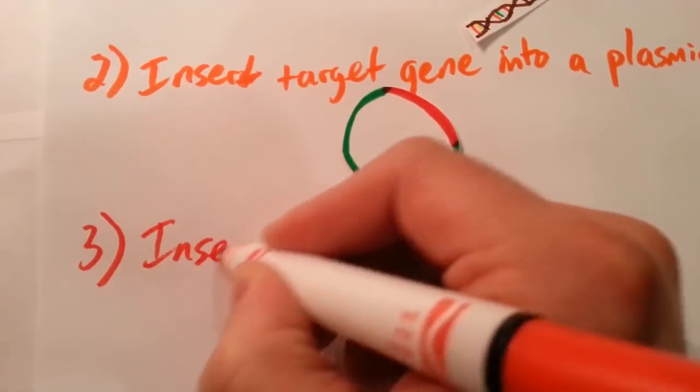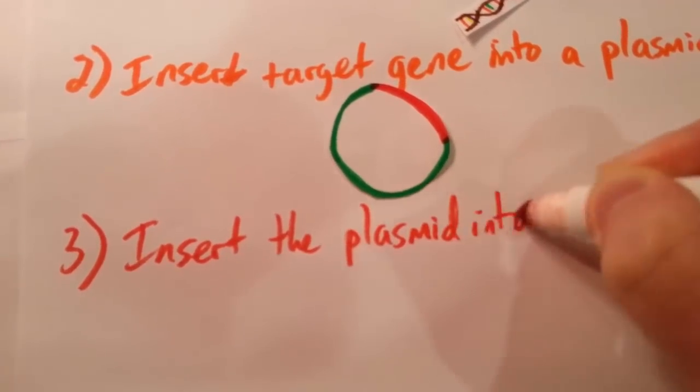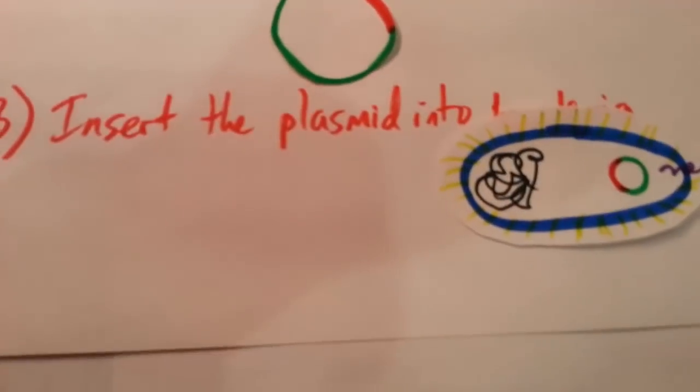And step number three was actually pretty simple. All we had to do was jam our plasmid that we just created into a bacteria.